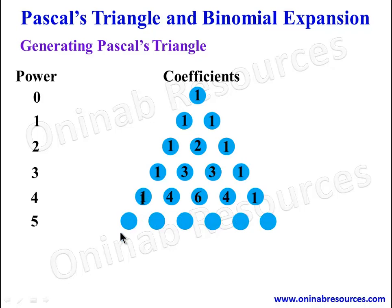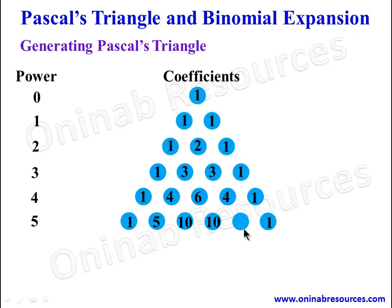For power 5, we have six terms. The first and last coefficients are 1. The second term is 1 plus 4, giving 5. The third term is 4 plus 6, giving 10. The fourth term is 6 plus 4, giving 10. The fifth term is 4 plus 1, giving 5. So the row is 1, 5, 10, 10, 5, 1. The triangle continues endlessly, but for this tutorial we stop at power 5.